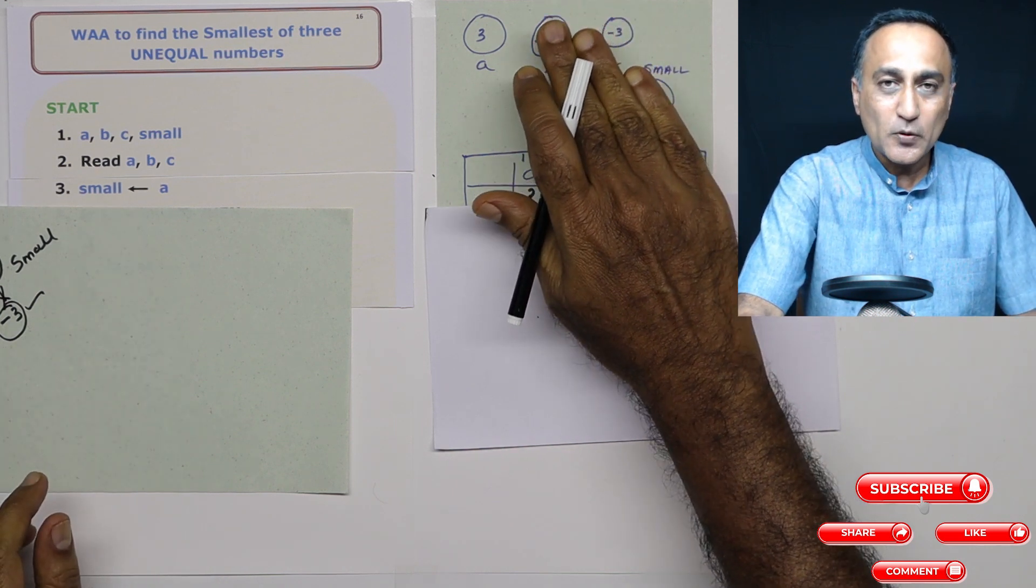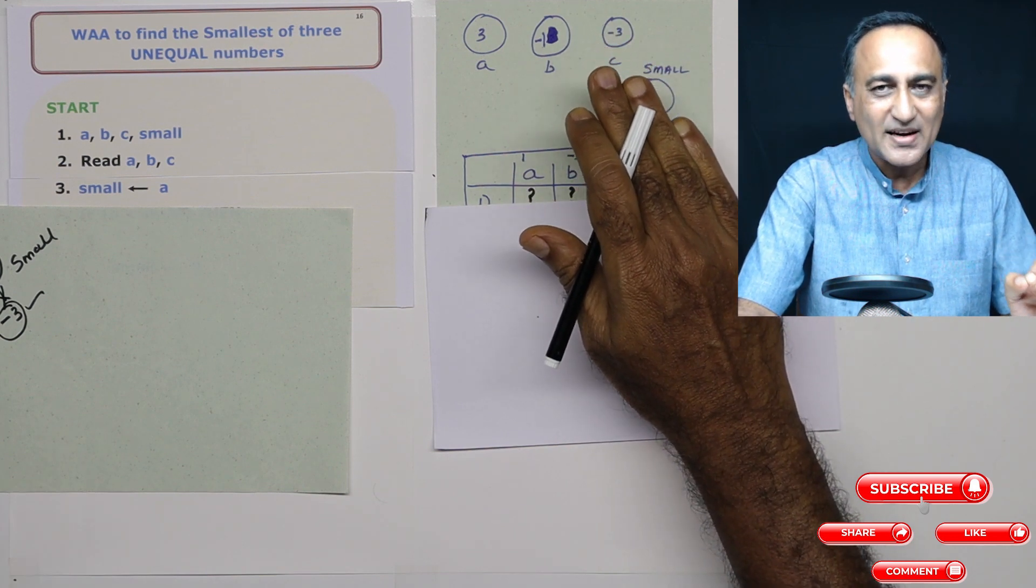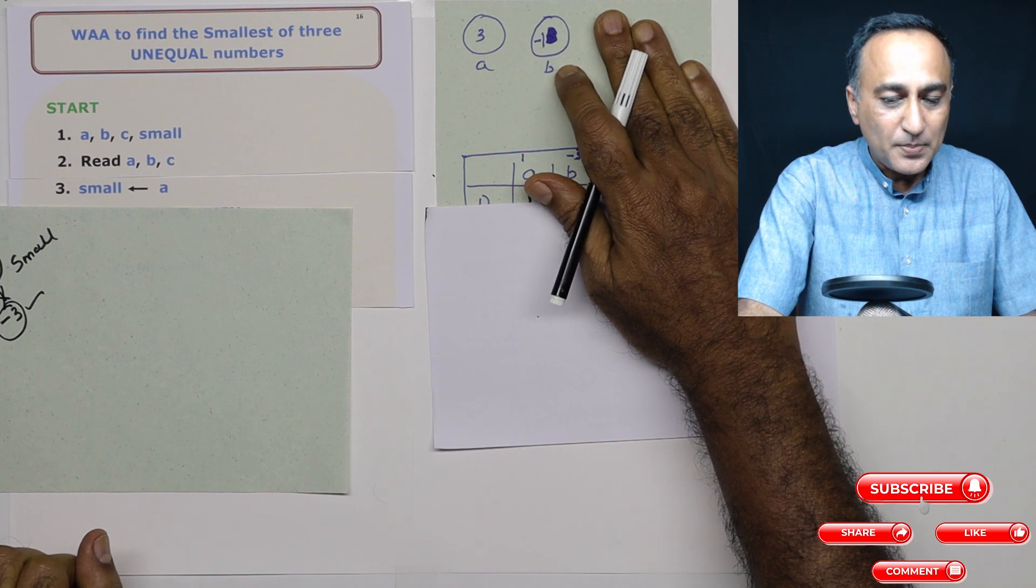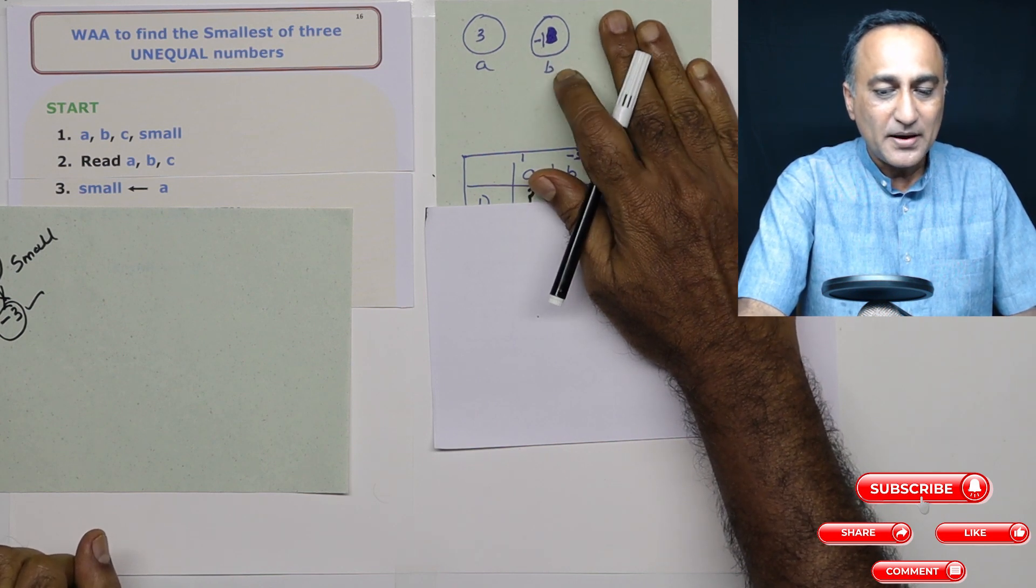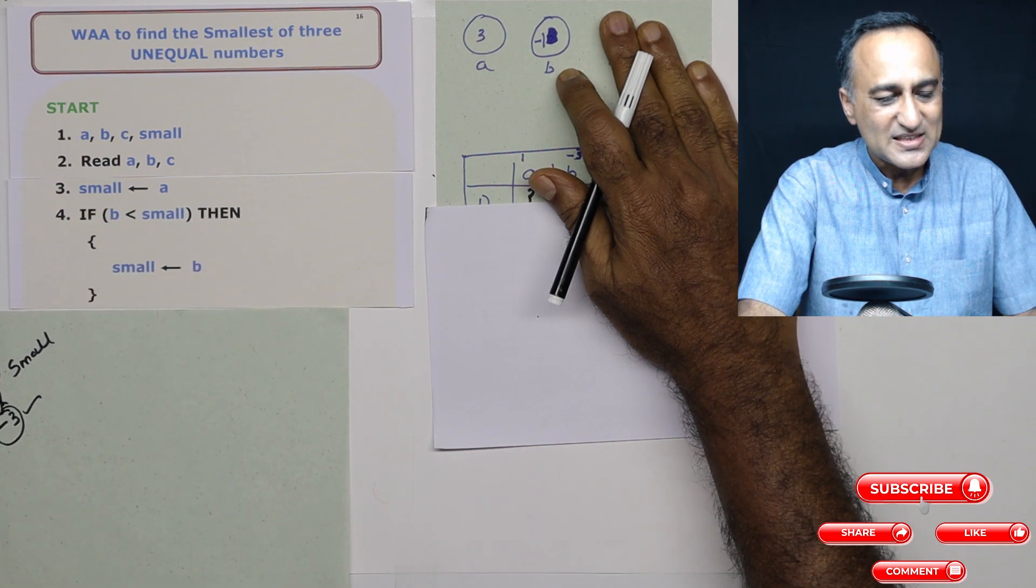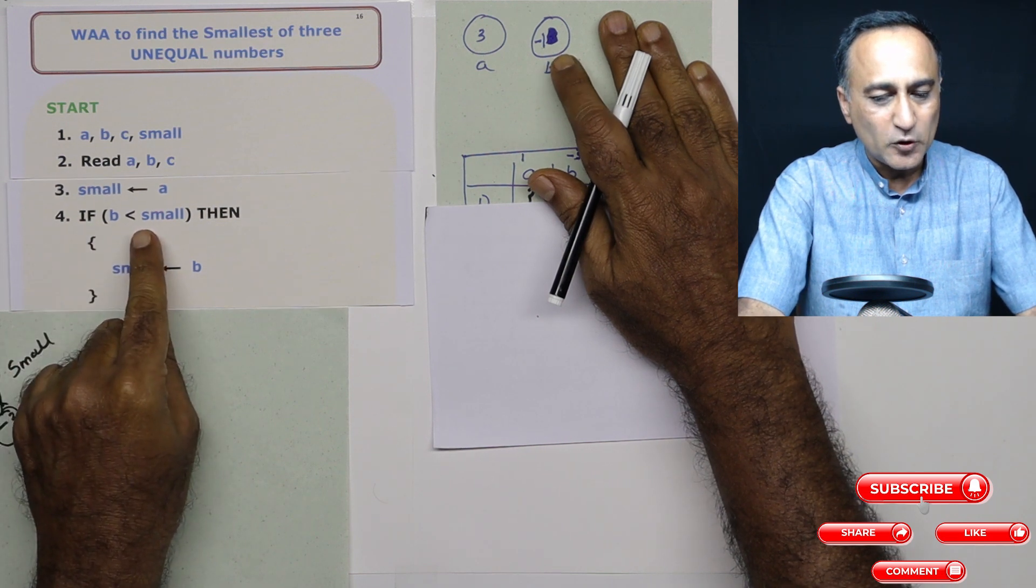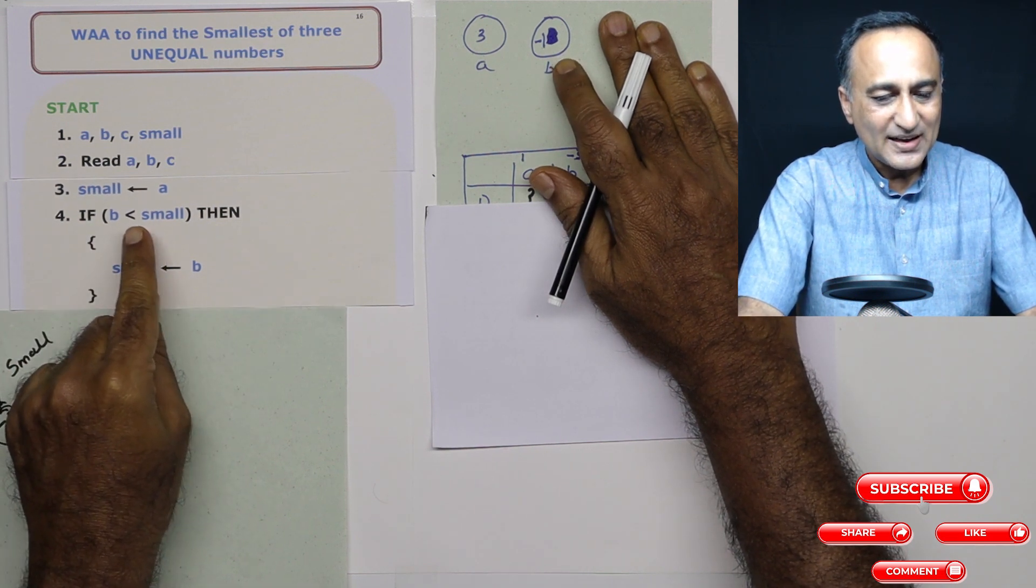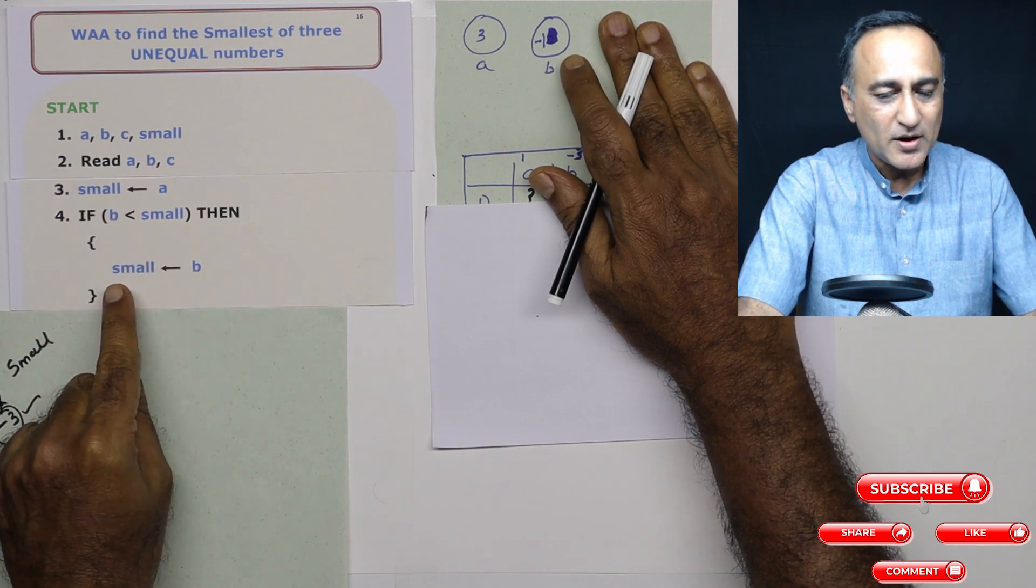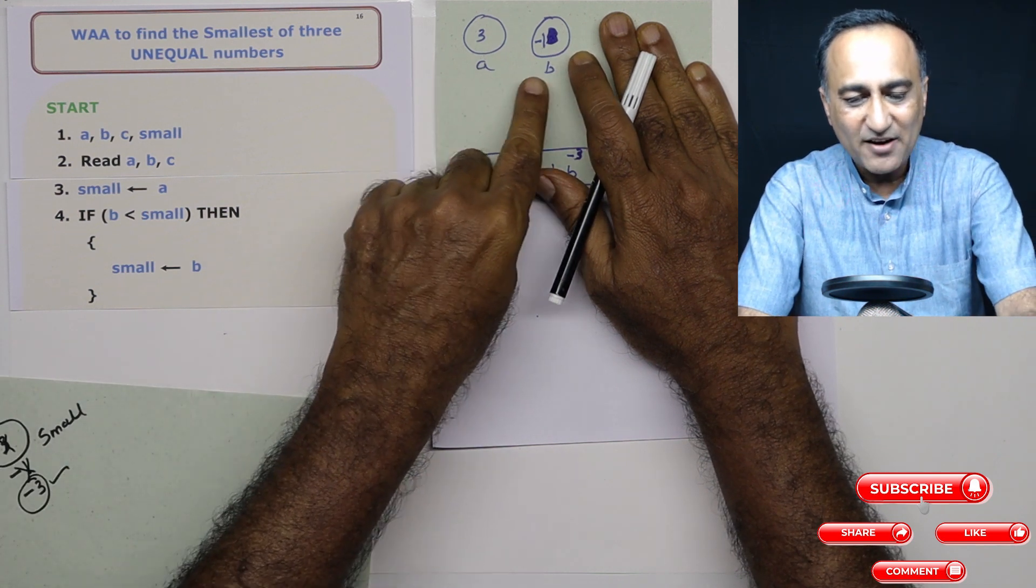Now, I am not going to process both at the same time. Computers can process only one thing at a time. So now I see b. I compare b, not with a, but I compare b with small. So in the next statement, I am comparing if b is less than small. If this condition happens to be true, is minus 1 less than 3? Yes, this condition is true. So my new small value is going to be minus 1. So I have processed a, I have processed b.